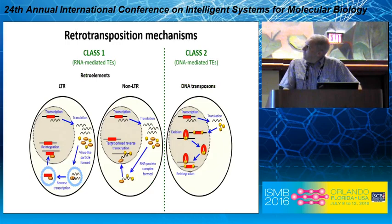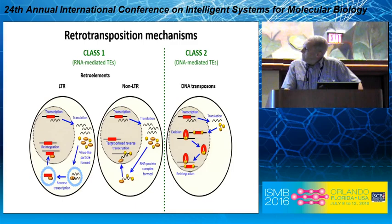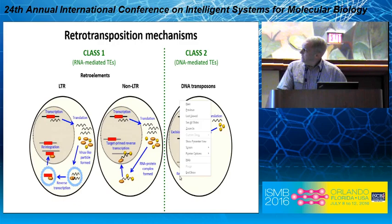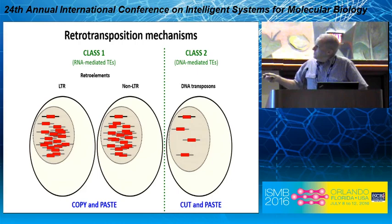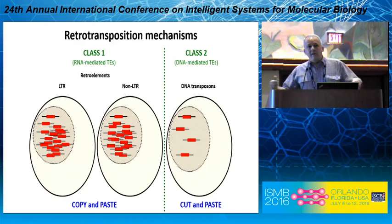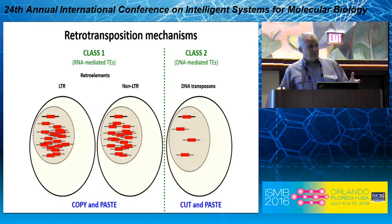They have somewhat different retrotransposition mechanisms. The DNA transposons basically encode a transposase that helps them move around. The class 1 non-LTR elements contain two open reading frames, one of which binds to the transcript, and the other can nick the DNA and cause reverse transcription so that the retrotransposon is copied back into the genome. DNA transposons use a cut-and-paste mechanism, so they don't really expand in numbers, whereas retro elements can make multiple copies and keep expanding, colonizing the genome and accounting for large parts of it.